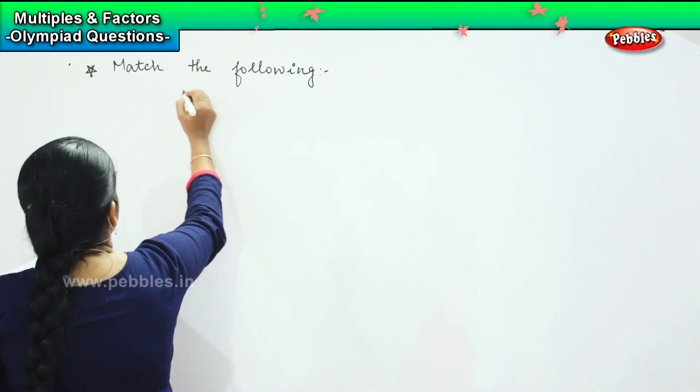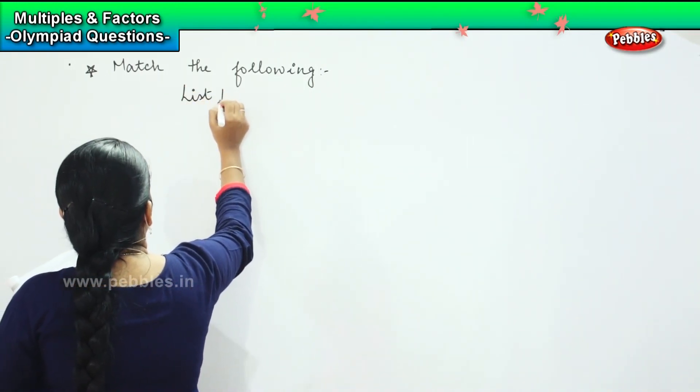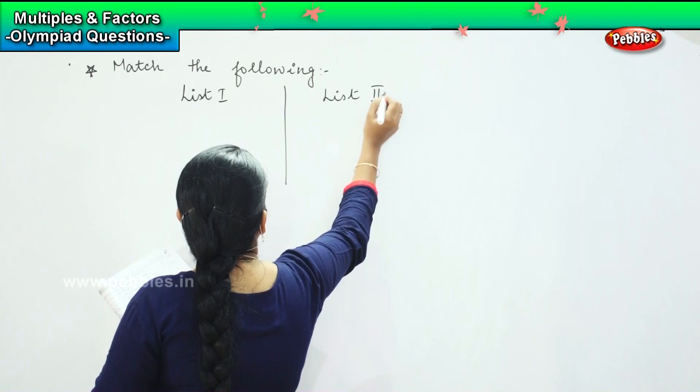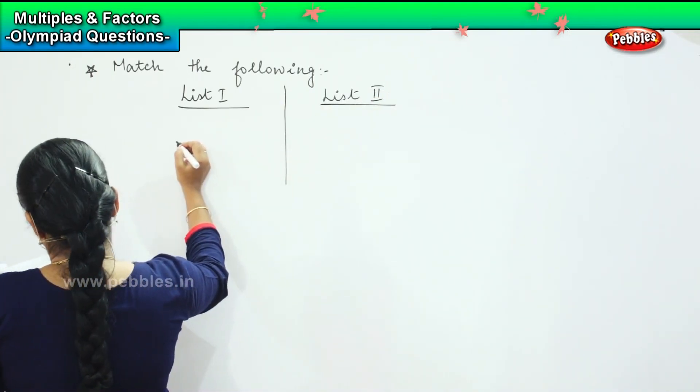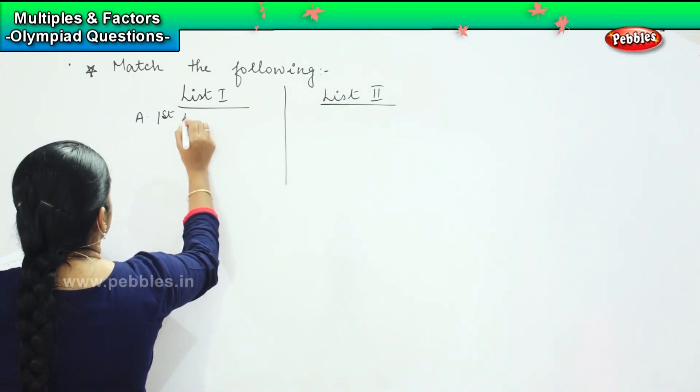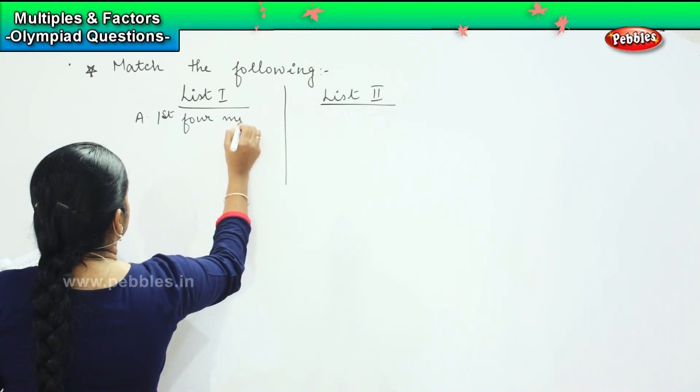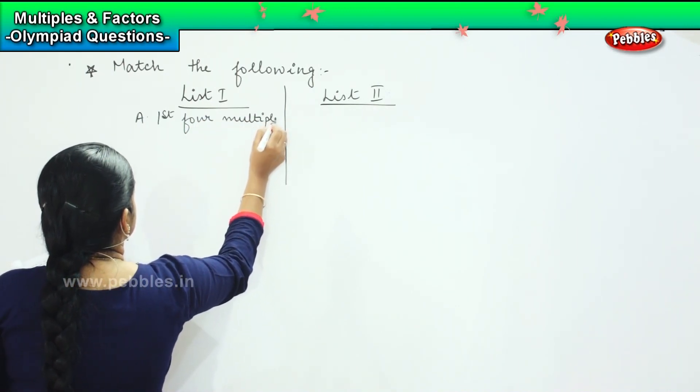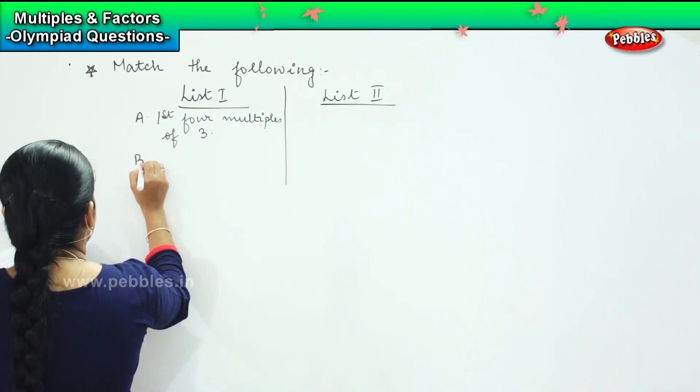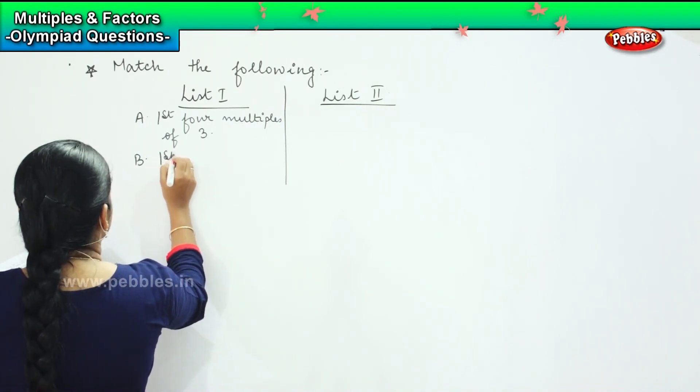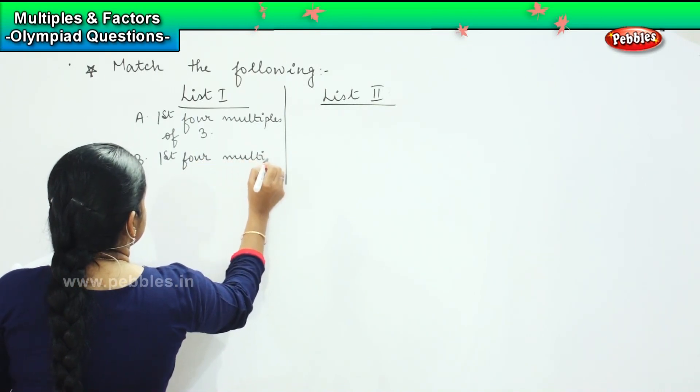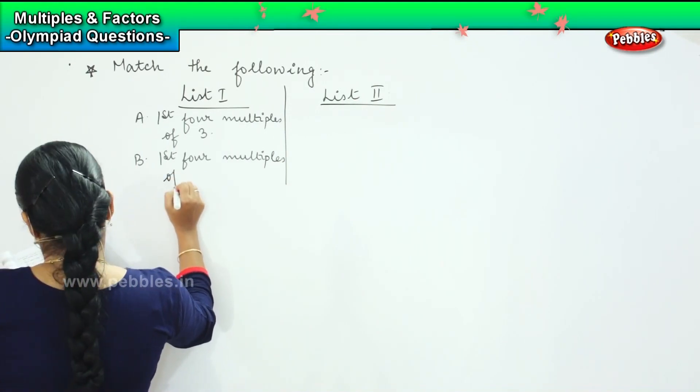So here you have List I and this side we have List II. So A says first four multiples of three. Second, first four multiples of six.